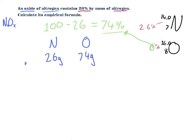From the periodic table I can figure out the molar masses of these two elements. The molar mass of nitrogen is 14 grams per mole, and the molar mass of oxygen is 16 grams per mole. I'm converting the relative atomic mass into molar mass by adding the units grams per mole.